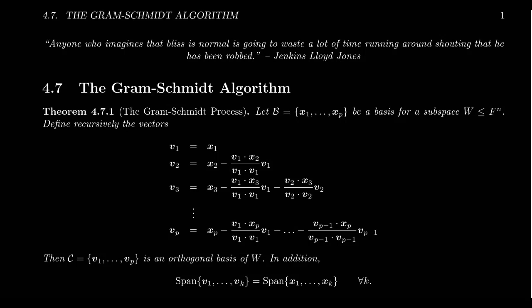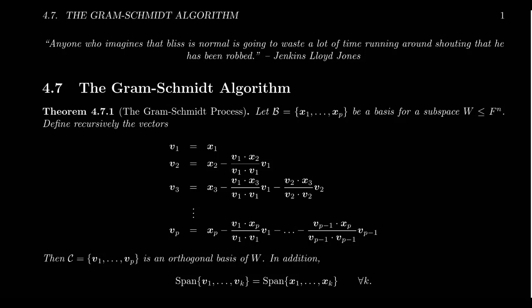Now some people present the Gram-Schmidt algorithm as normalizing along the way. I don't really see a need of doing that initially — we can always normalize when we're done. The Gram-Schmidt process actually constructs the orthogonal basis in a recursive manner. So let's explain what we mean by that.